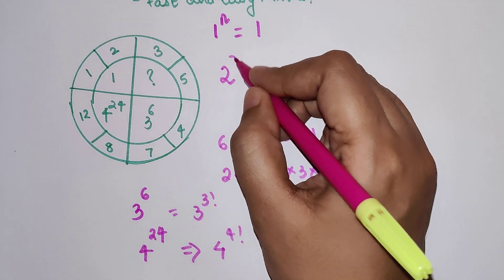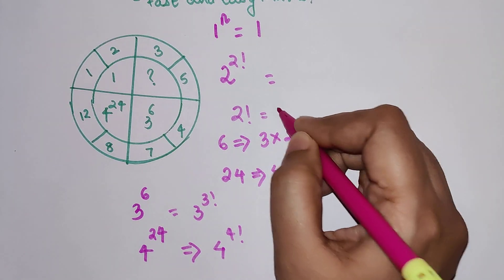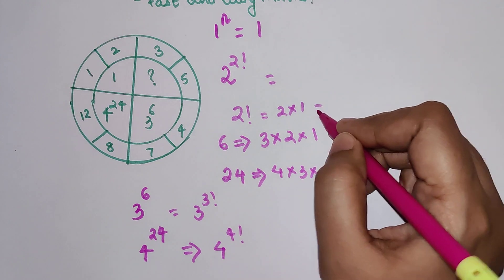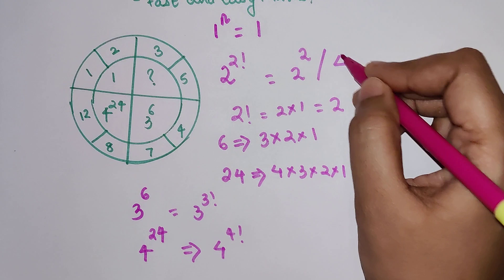So this will be what? 2 raised to 2 factorial. Now we know that 2 factorial, 2 factorial is nothing but 2 into 1 which is going to be just 2. So your answer will be 2 raised to 2 or you can just write 4.